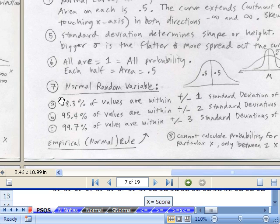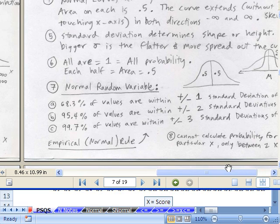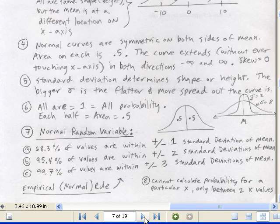And normal random variable. This is our empirical rule or normal rule. Approximately 68% of the values are within plus or minus 1 standard deviation. Notice this rule is given 68% plus or minus 1 standard deviation. That's why it's so convenient to calculate z, because z tells us how many standard deviations. 95.4 within plus or minus 2 standard deviations. 99.7. In some of my drawings, I put 68, 95, 99, even though this one should probably be rounded to 100. Those are estimates. 1, 2, 3 plus or minus standard deviations. And finally, number eight, cannot calculate probability for a particular x only between two x values. We've already mentioned that a few times.